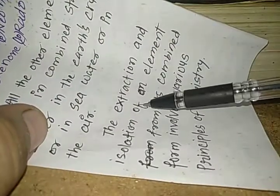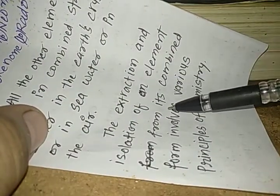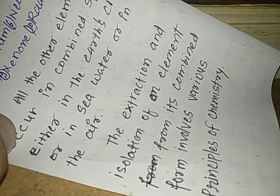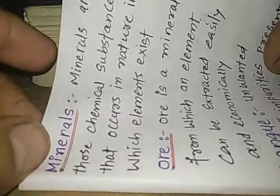The extraction and isolation of an element from its combined form involves various principles of chemistry. So, this combined form which are available at various places like earth's crust or in the sea water or in the air. We can get the pure element but we need to apply some principles of chemistry to obtain them in the pure form.